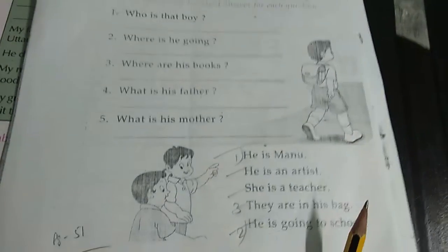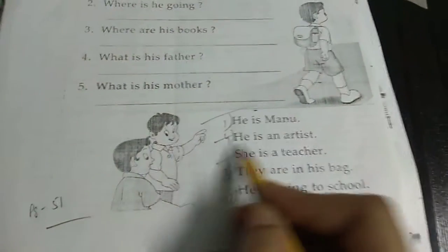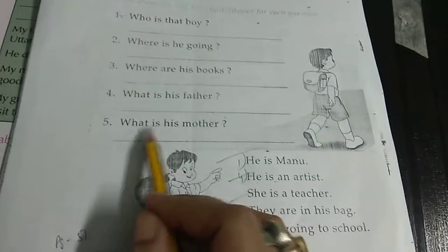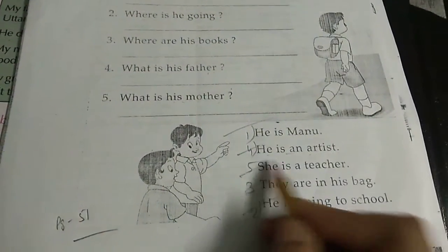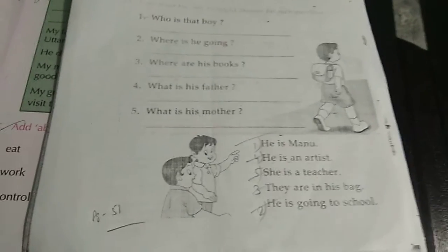What is his father? Number 4, he is an artist. What is his father? He is an artist. What is his mother? She is a teacher. She is a teacher. His mother is a teacher. Clear?